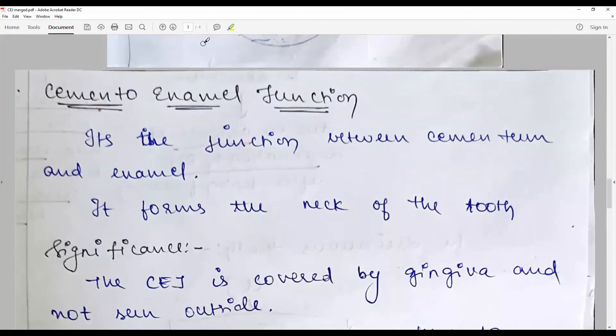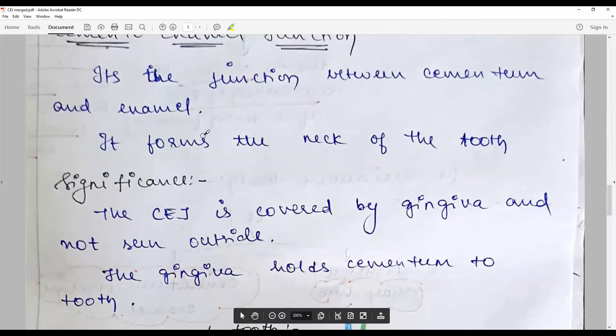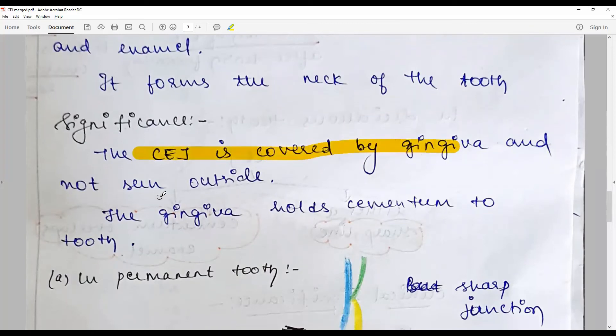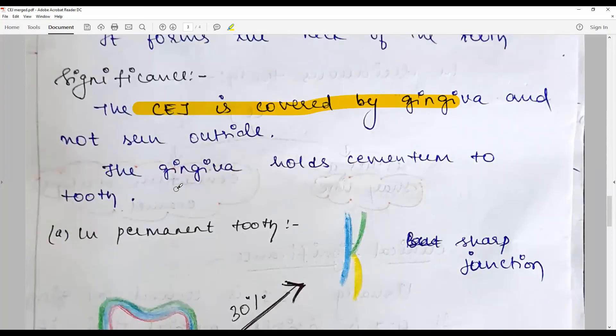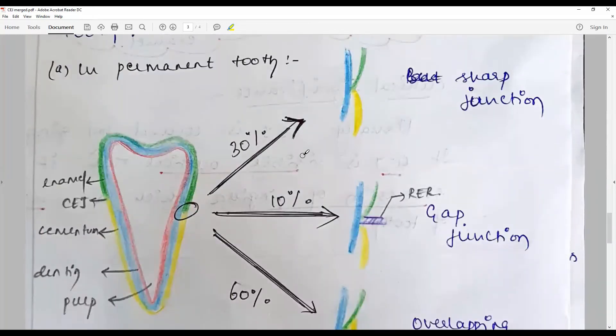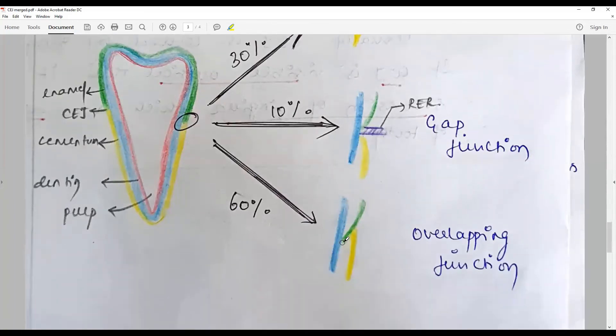The cemento-enamel junction is the junction between the cementum and enamel. It forms in the neck of the tooth. The CEJ is covered by gingiva, not seen, and may be the reason for sensitivity in most cases. In permanent tooth: 30 percentage sharp junction, 10 percentage there is a gap between the junction, and 60 percentage cementum overlaps the enamel.